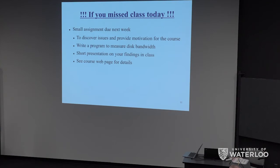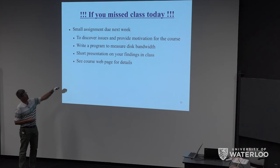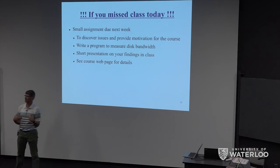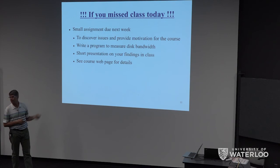If you missed class today, there's a small assignment due next week — it's on the web page. The assignment is designed to help you discover issues and motivation for what we'll be doing in the class. The idea is you write a program to measure disk bandwidth — it needs to be a spinning disk. If you don't have access to a spinning disk, get in touch and I'll get you a machine with access. A lot of the CSCF machines have spinning disks. Then you'll do a very short presentation on your findings in class. See the course web page for details.